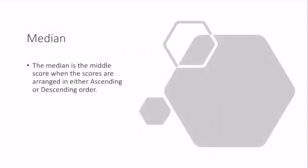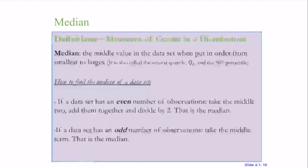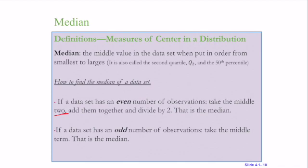Median requires a little bit less math. The median is the middle score when the scores are arranged in either ascending or descending order. I always arrange them in ascending order. It just makes sense to me to go from smallest to largest. There's two different cases here. There's one if I have an even number of data, and there's one if I have an odd number of data. If a data set is even, has an even number of observations, I'm going to take the middle two and add them together and divide by two. If the data set is odd, I just take the middle term. This requires no calculation.